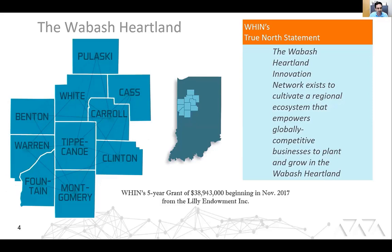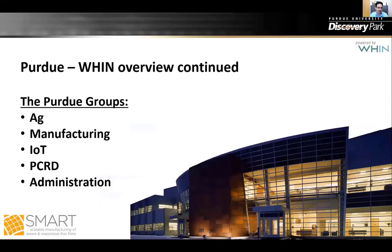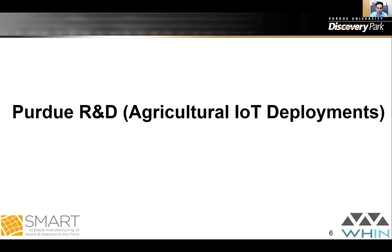The WIN project covers the Wabash Heartland location in Indiana, covering 10 counties around Tippecanoe County and Purdue University. It's a five-year grant from the Indiana Endowment that started in 2017. The goal is to make these 10 counties the epicenter for precision agriculture and smart manufacturing, empowering businesses to learn and grow in the Wabash Heartland. There are around 100 people working on this from disciplines including agriculture, manufacturing, the IoT team at Birck Technology Center, and the Center for Regional Development.